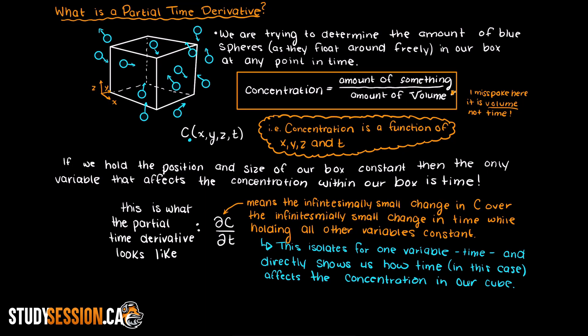Intuitively, this is why it is called a partial time derivative. We are just observing how one particular piece of our function affects the concentration.